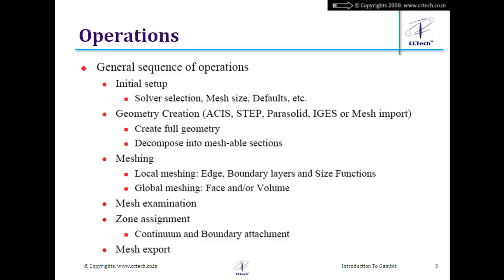The general sequence of operations in GAMBIT starts with selecting the solver — whether you are creating a mesh for Fluent, FIDAP, or something else — because the solver selection determines the type of elements available. We also need to decide the mesh size and clustering strategy before starting. There are defaults in GAMBIT that are very strong and will determine how your geometry and meshing will behave.